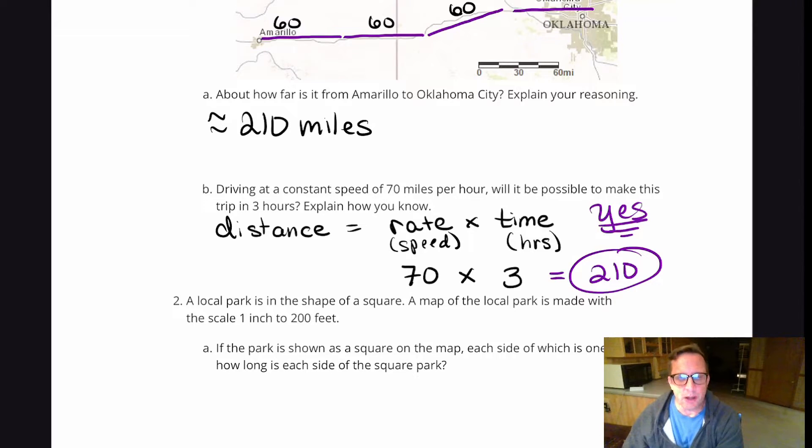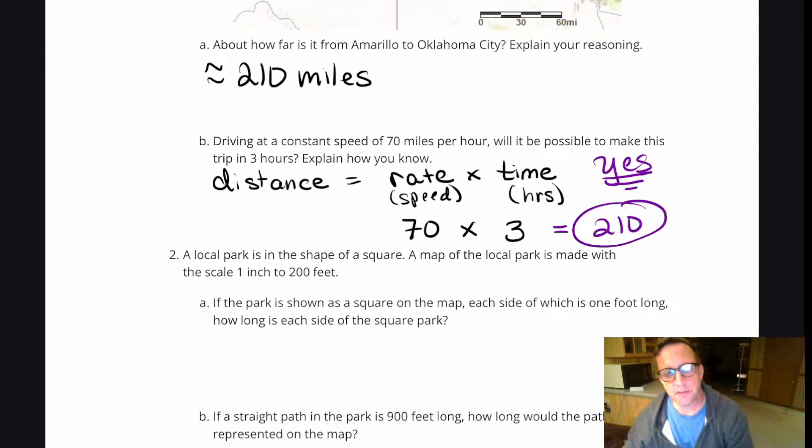Because no one really drives at a constant rate. In real life, our driving can fluctuate, go up, go down. You might have to stop for snacks or gas or whatever. There's a lot of other things that happen. But for the sake of this math problem, you have to just imagine that your speed was exactly 70 miles an hour for the entire trip.